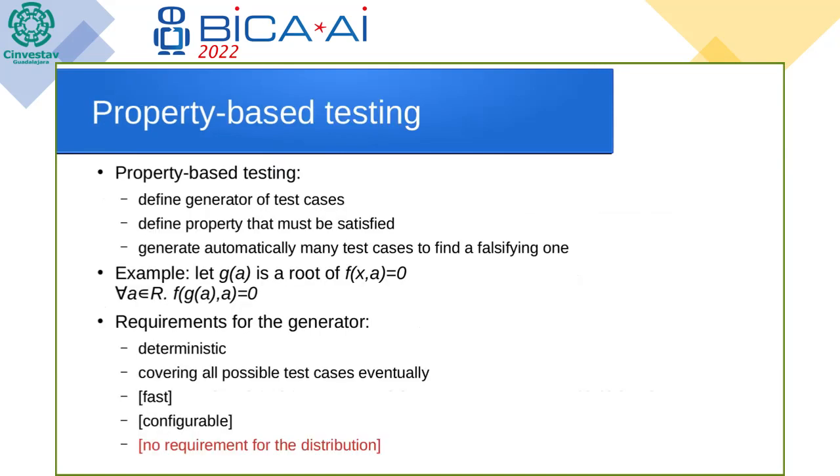First of all, I would like to recall the idea of property-based testing as the possible application of our generator, which is to formalize a property of the testing unit, say function, specify a generator of test cases, and check the property on a large sample of generated test cases. For example, let's consider when one writes a function g that searches for root of parametric equation given by a function f.